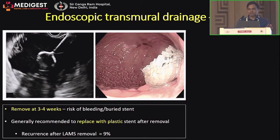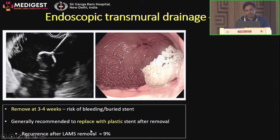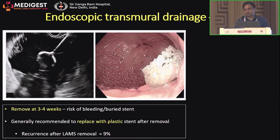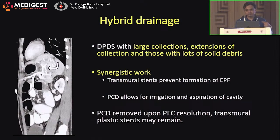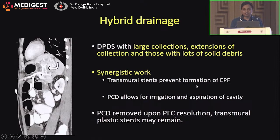With LAMS, when placed for a disconnected pancreatic duct with pseudocyst or walled-off necrosis, removal is recommended at 3–4 weeks due to high risk of bleeding or buried stent. It is generally recommended to replace LAMS with a plastic stent after removal, though studies show the risk of recurrence after LAMS removal is only 9% — significantly less than after plastic stent removal — because LAMS are longer, wider diameter, and achieve complete drainage. An additional advantage of LAMS is the ability to perform endoscopic necrosectomy. Hybrid drainage combining transmural stenting and percutaneous drainage is used for large collections or extensions with significant solid debris.